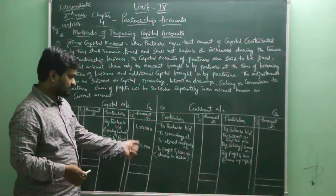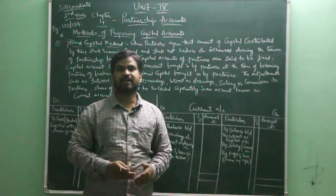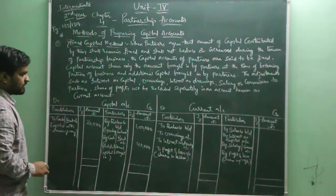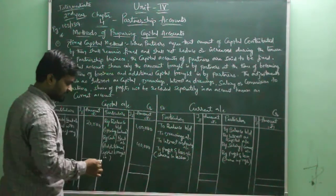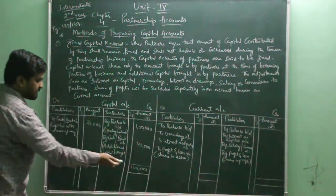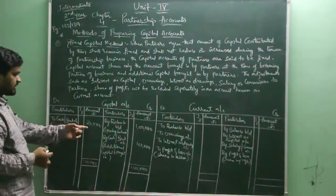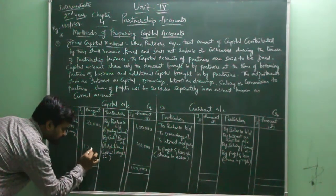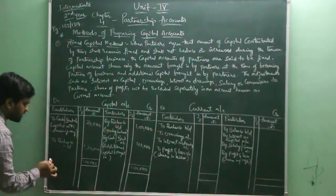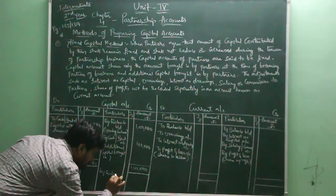On the debit side, 'to cash or bank' represents capital withdrawn, if any. For example, if the partner has permanently withdrawn rupees 20,000, then the total on the credit side is 1 lakh 40,000. After deducting the withdrawal of 20,000, the capital balance will be only rupees 1,20,000. This will be written as 'to balance carried down,' which is the closing balance. The same balance will be brought down as 'by balance brought down' at the start of the next period.